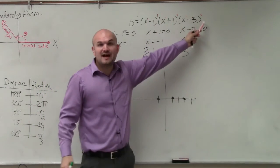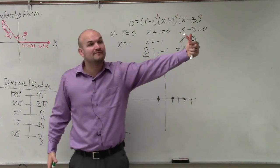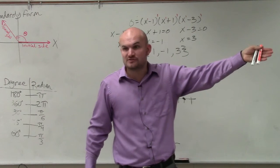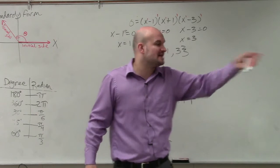Then you look at the power of each factor. The power of each factor is 1, which is odd. So therefore, if the power is odd, that means the graph is going to cross at each of those zeros. When the multiplicity is odd, the graph crosses at those zeros.